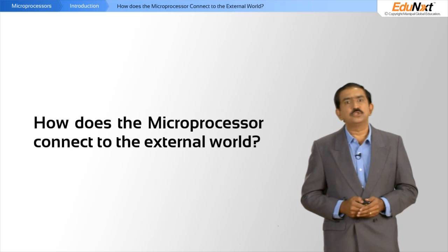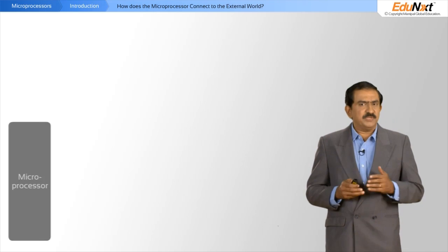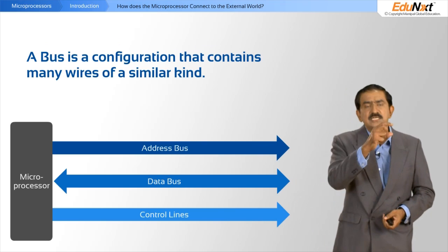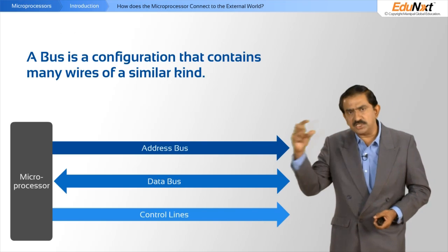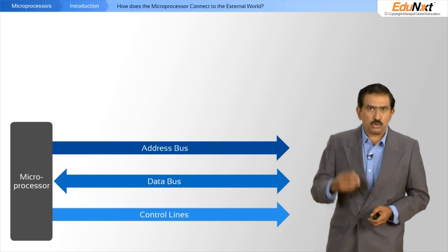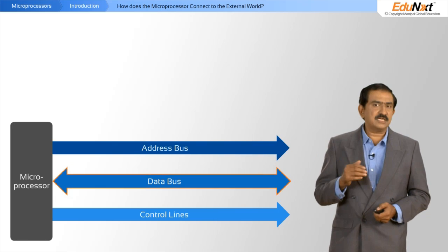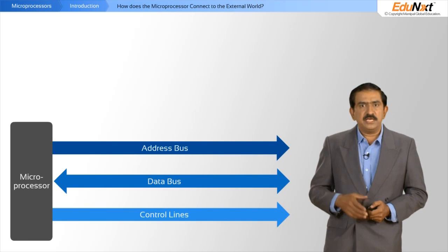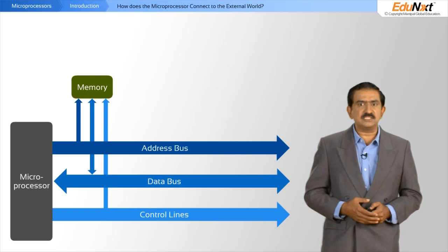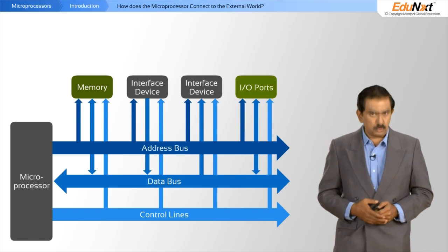How does the processor connect to the external world? It has three kinds of buses that come out. A bus is a configuration that contains many wires of a similar kind. You have the address bus, the data bus, and a control bus. Each of these are connected to either memory devices, various interface devices, or I/O ports.